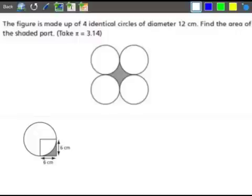In this sum we have four identical circles and we have a diameter of 12 centimeters for each circle. We need to find out the area of this shaded area.